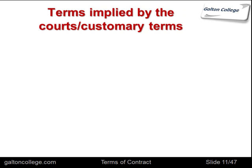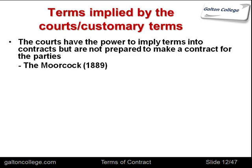Terms can be implied by the courts — these are customary terms. The courts have power to imply terms into contracts but they are not prepared to make a contract for the parties. So the courts can imply a term and say there was a term in there that perhaps wasn't mentioned, but there is one because of custom, tradition, the way the business or industry is run, or the type of society it is. There is an implied term even though it's not specified.